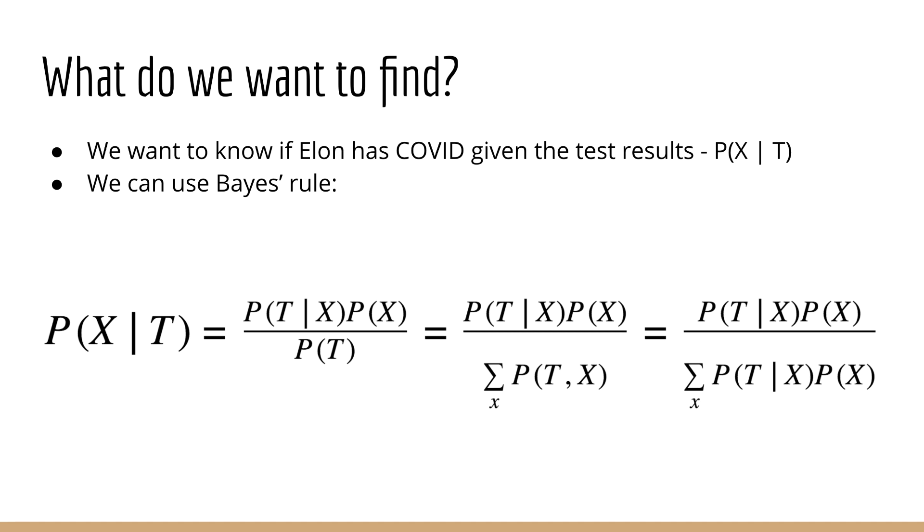We are given p of t given x and p of x, which are the likelihood and prior, respectively. We want to find p of x given t, which is called the posterior. Thanks to Bayes' rule, we know that this is equal to p of t given x times p of x divided by p of t. p of t is just equal to p of t and x summed over x, and this quantity can be rephrased in terms of p of t given x times p of x. Okay, so that's Bayes' rule.